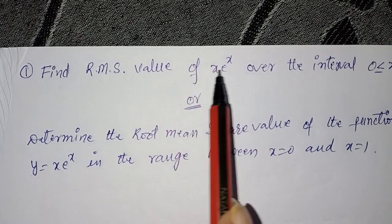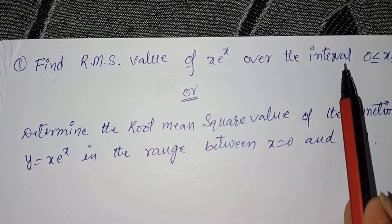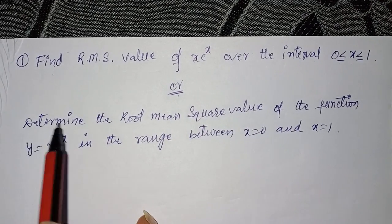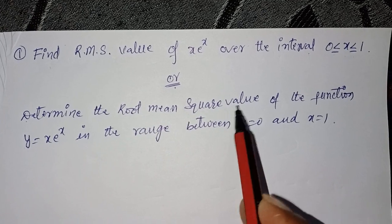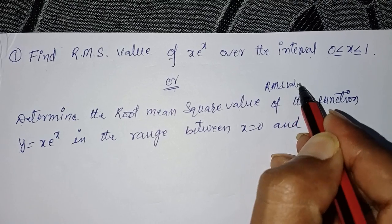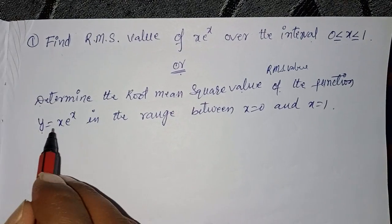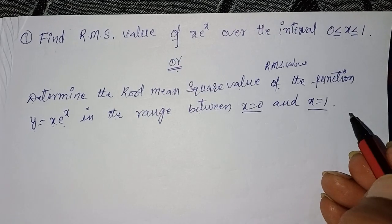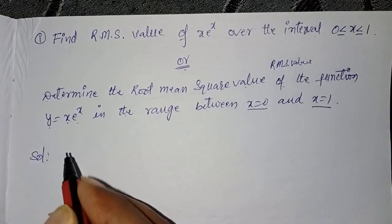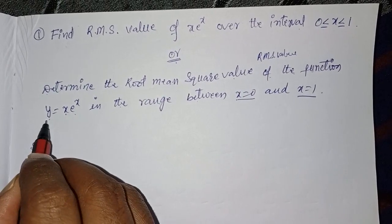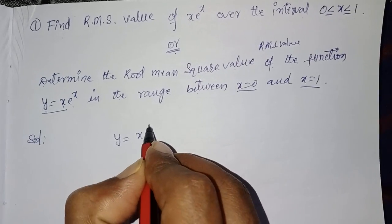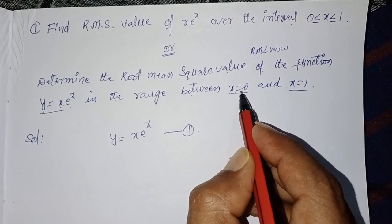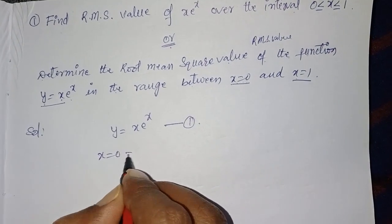Find the RMS value of x·eˣ over the interval 0 ≤ x ≤ 1. In other words, determine the root mean square value of the function y = x·eˣ in the range x = 0 to x = 1. Solution: write down the given function y = x·eˣ as equation number 1. The limits are x = 0 (which is a) and x = 1 (which is b).